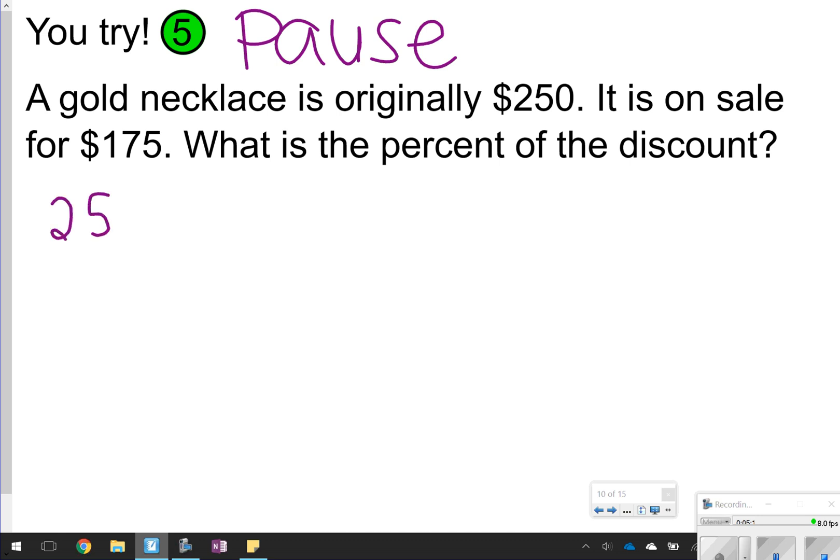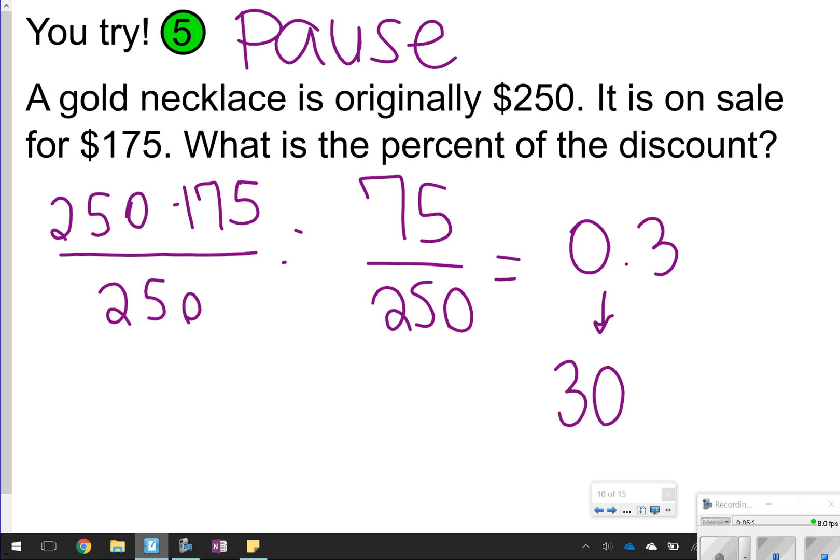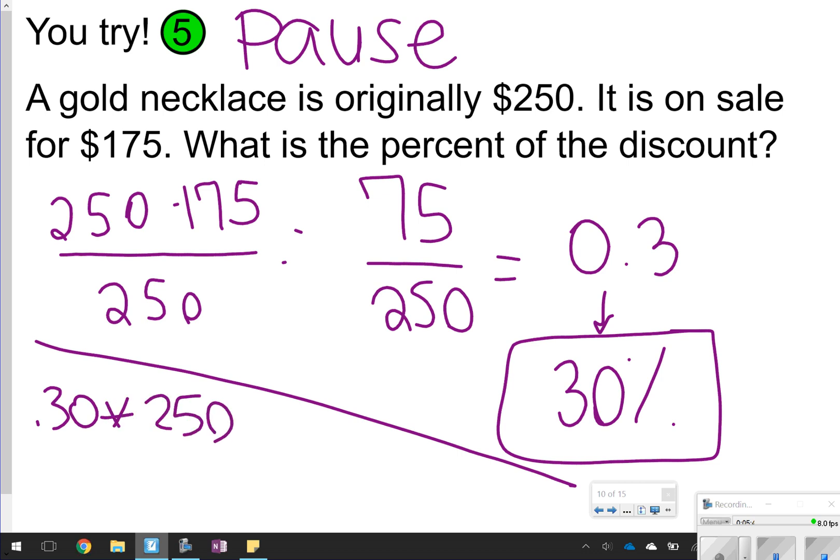All right. So what we're going to do first is find the percent decrease. So I'm going to do 250 minus 175 divided by 250. So 250 minus 175 is 75. So I got 75 over 250, meaning divided by. And I get 0.3, which is equal to 30%. Again, if you want to, you could check it. Just finding 30% of 250. So 30% of 250 is $75. And 250 minus 75 does give you the $175 that it's on sale for. So good job.